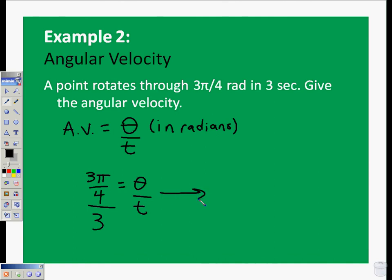So if we divide 3 pi by 3, we're saying that's 3 pi over 4 times the reciprocal, or 1 third. It's going to be 3 pi over 3 times 4, and the 3's cancel out, so we get pi over 4. Thank you.